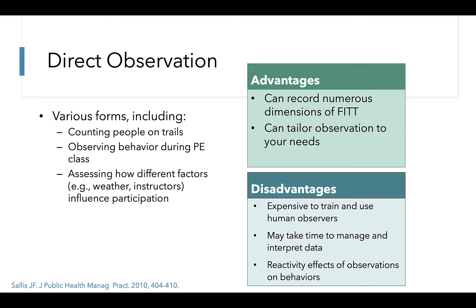Direct observation can be used to directly observe patients engaging in activities. This affords more flexibility in documenting numerous dimensions of the frequency, intensity, time, and type of exercise and allows you to tailor your observation to your needs. However, direct observation can be very expensive because it can take a lot of time to pay and train coders to code reliably. It can also produce a lot of data that may be difficult to manage and interpret. Finally, patients may alter their behavior if they know they are being observed.